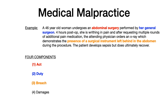Lastly, what are the damages — what did the patient suffer as a result of this breach? This patient developed sepsis, but luckily in this example the patient lives. These four criteria — act, duty, breach, and damages — must all be present for medical malpractice claims to be legitimate in the eyes of the law.